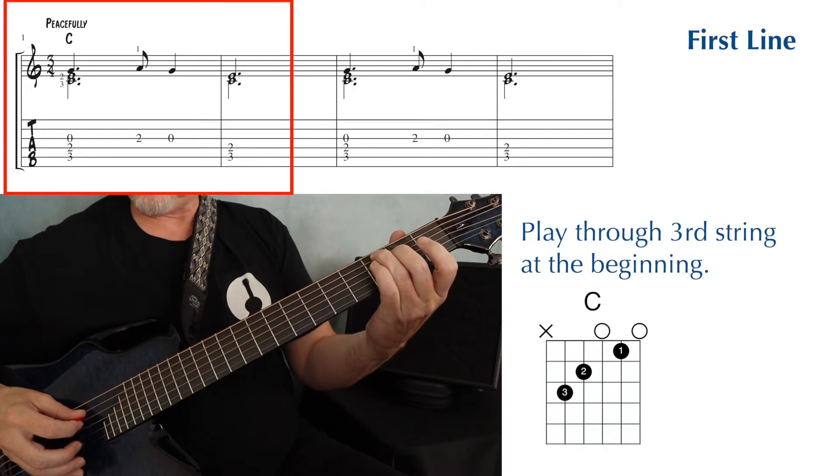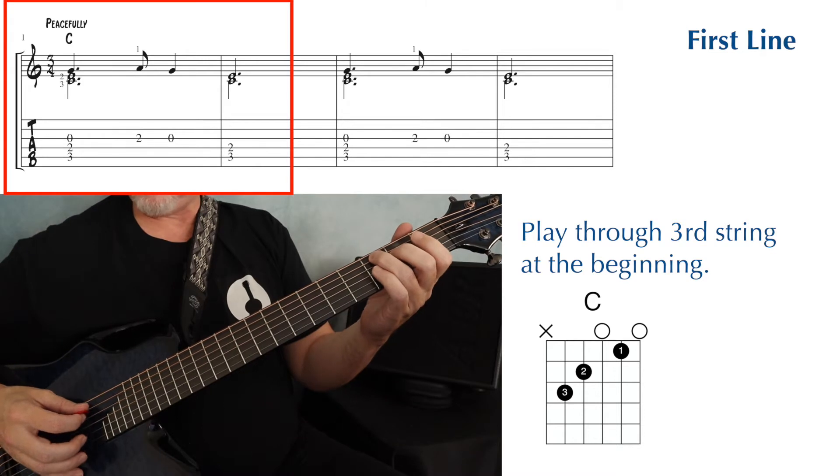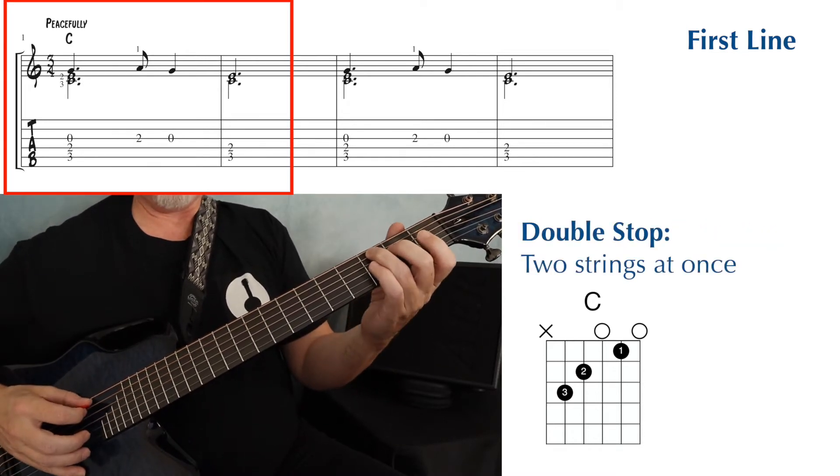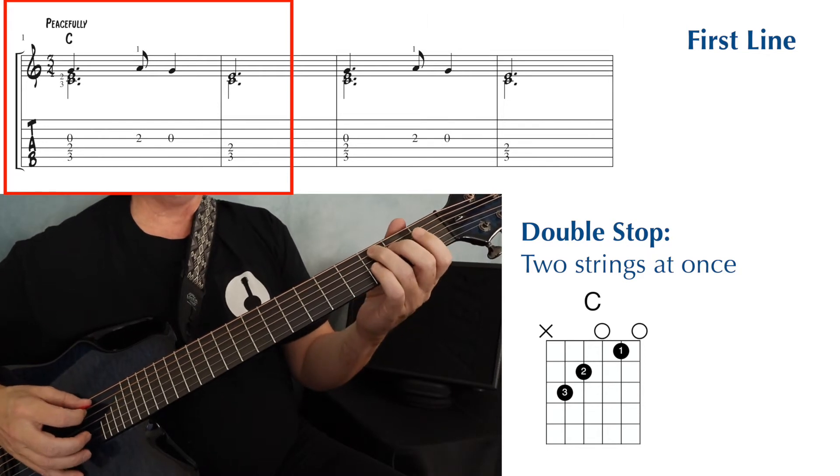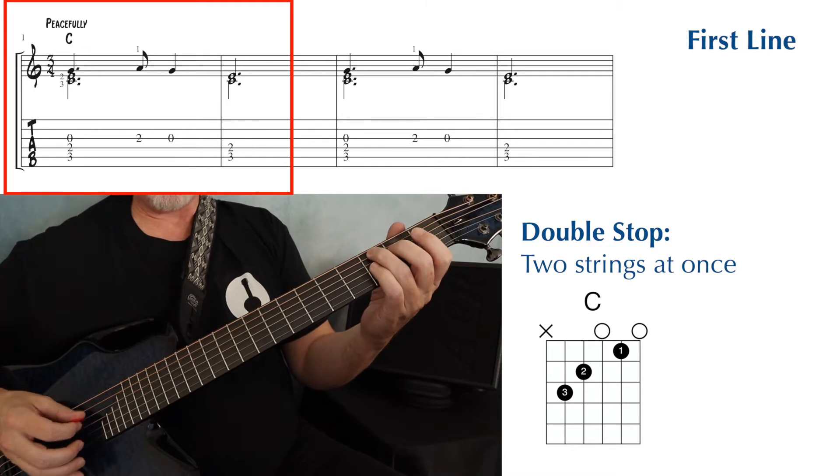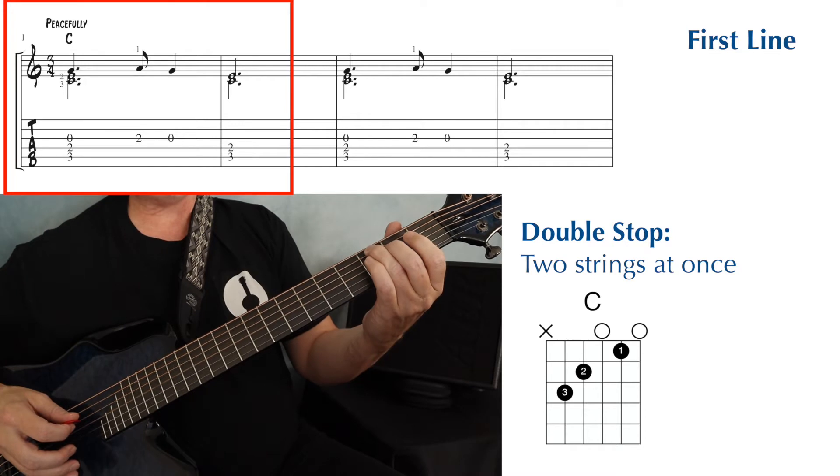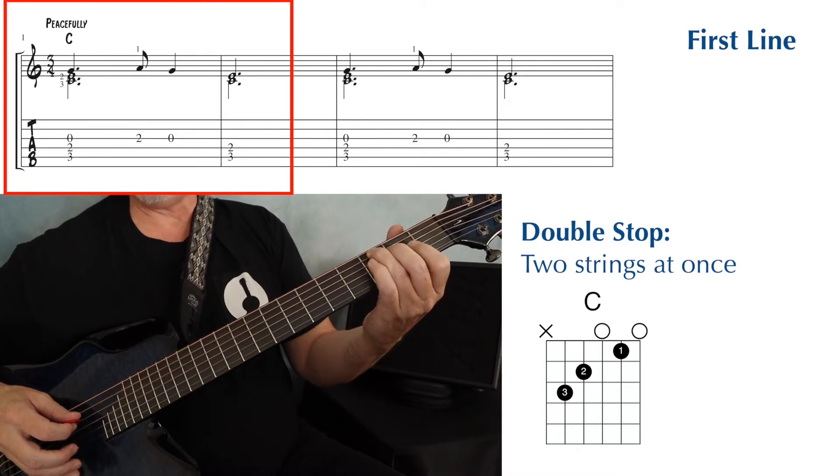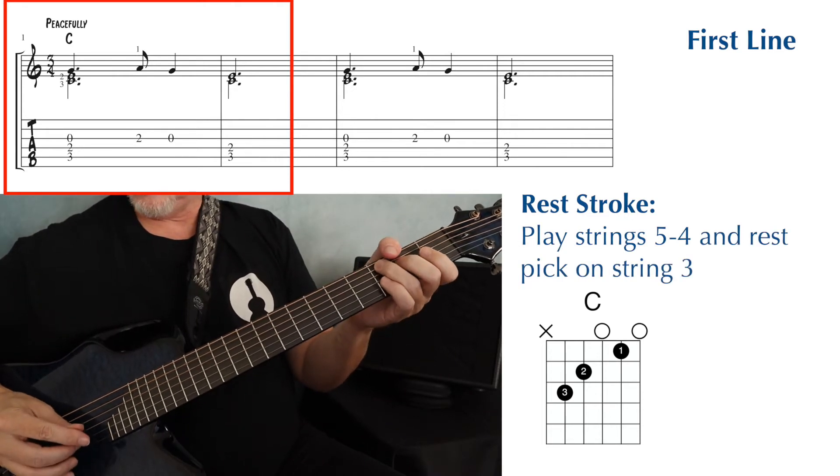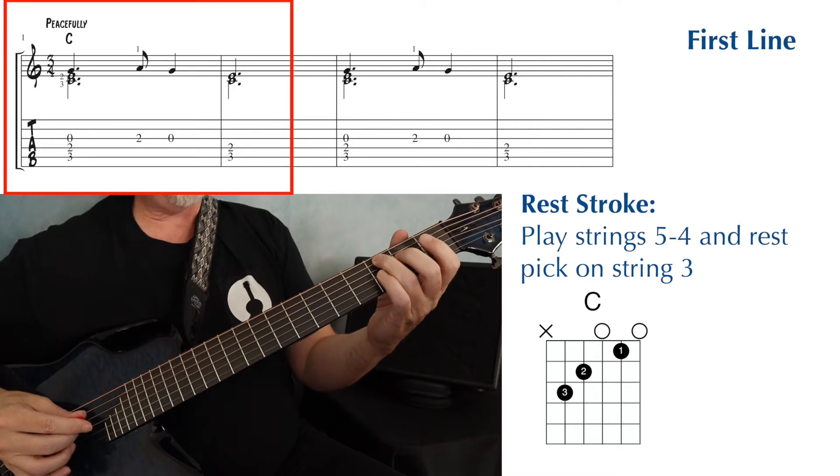And that last note of the measure, I like to create a little separation between that note and then the little double stop in the next measure. A double stop is when you're playing two notes at once. So what you can do for that, the last note of this first measure, you can either just briefly touch the string with your first finger, or on the next measure you can do a rest stroke. And what I'll do for that rest stroke is I'll play through the C and the E on the fifth and the fourth string, and then rest my pick on the third string.